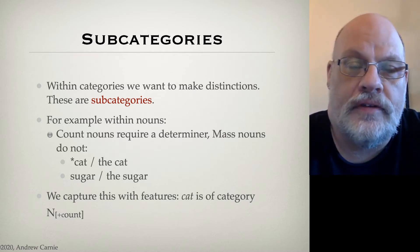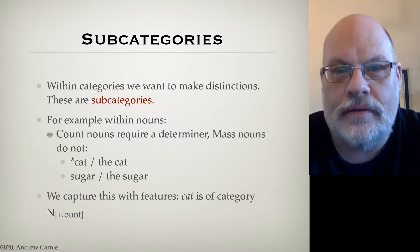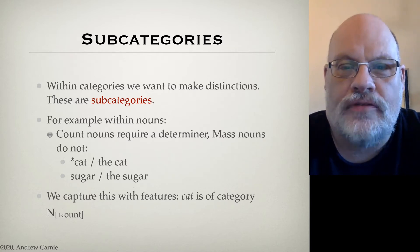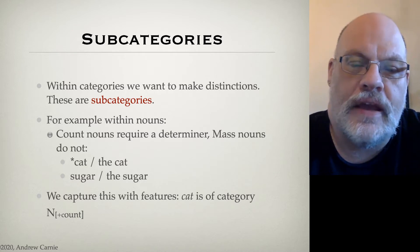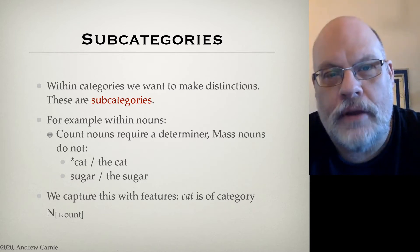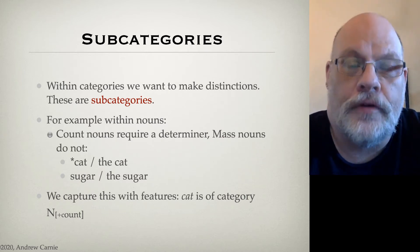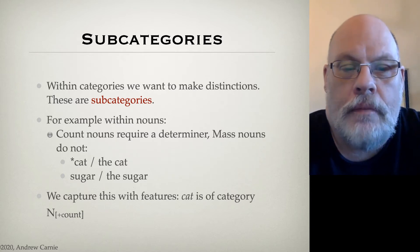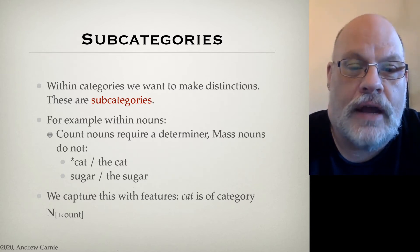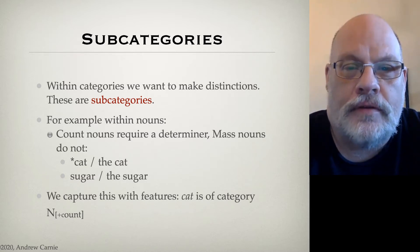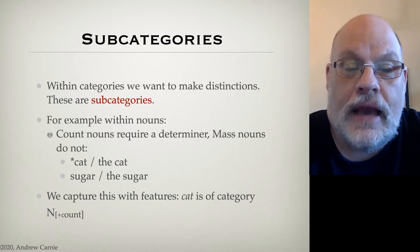Another example is the distinction between count nouns and mass nouns. Count nouns are nouns like cat — you cannot say cat just by itself, you have to put a determiner in front of it; you have to say the cat. Mass nouns, by contrast, you can use without any kind of determiner — for example, sugar. Of course, you can also say the sugar. Another difference is which form of many or much you use: with count nouns you use many, and with mass nouns you use much. So we can say many cats, but much sugar.